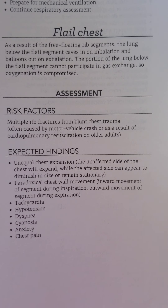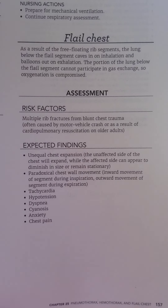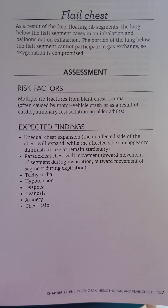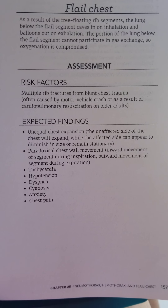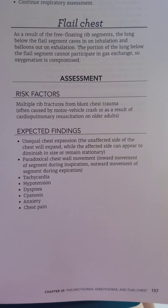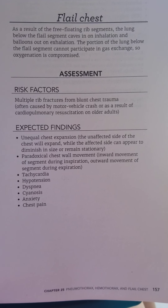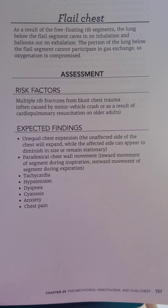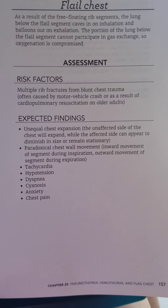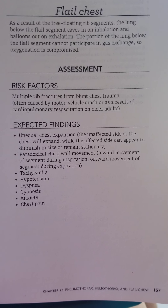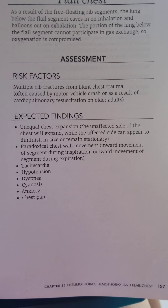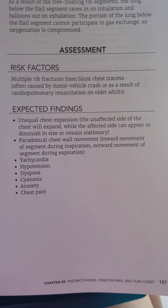Assessment for flail chest would look at risk factors, which include multiple rib fractures from blunt chest trauma — often caused by a motor vehicle crash or as a result of cardiopulmonary resuscitation in older adults. Expected findings include unequal chest expansion, where the unaffected side expands while the affected side appears to diminish in size or remain stationary, and paradoxical chest wall movement — inward movement of the segment during inspiration and outward movement during expiration.